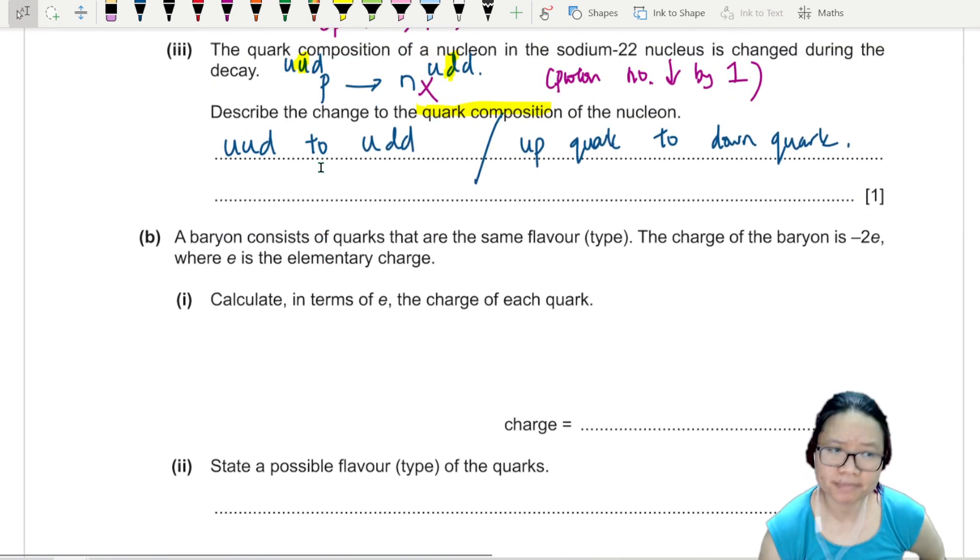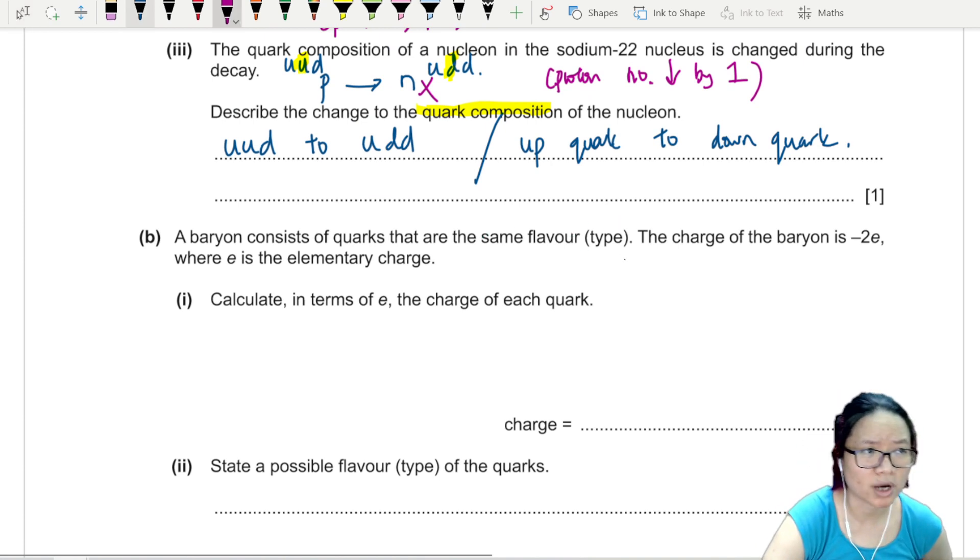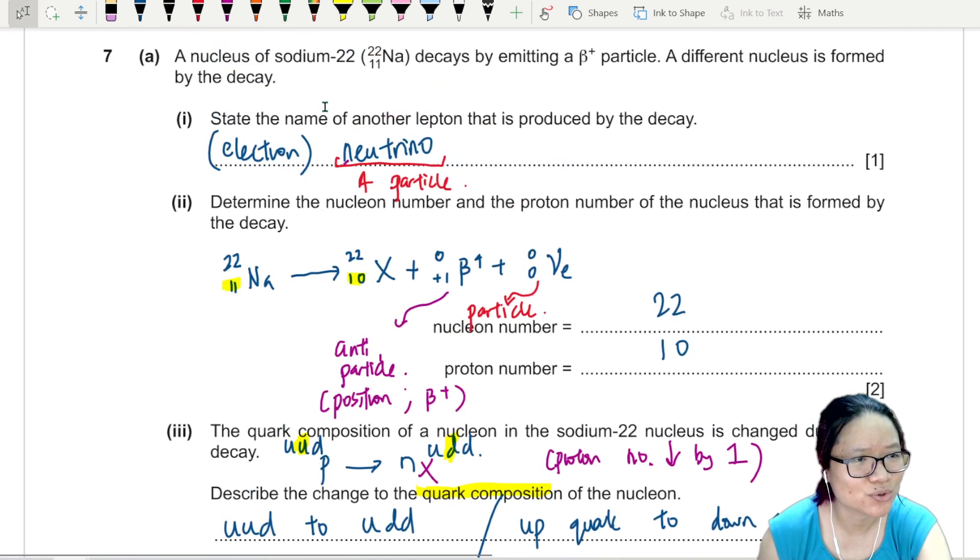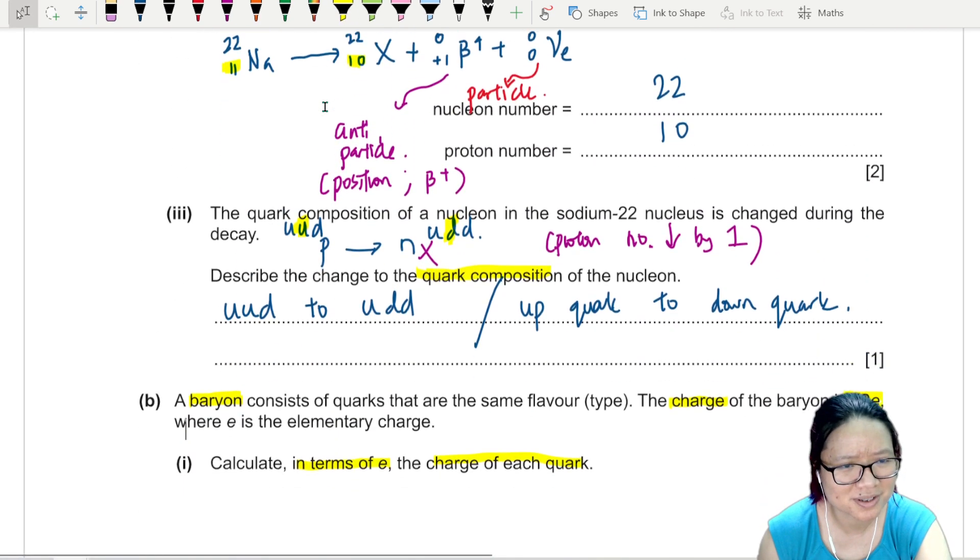A baryon consists of quarks that are of the same flavor type. So either up, up or down, down. The charge of baryon is negative 2e. Calculate in terms of e, the charge of each quark. So baryon has how many quarks? Because we don't know this answer, I guess you can't answer a question. Did they tell you? I mean, I know, but do you know?